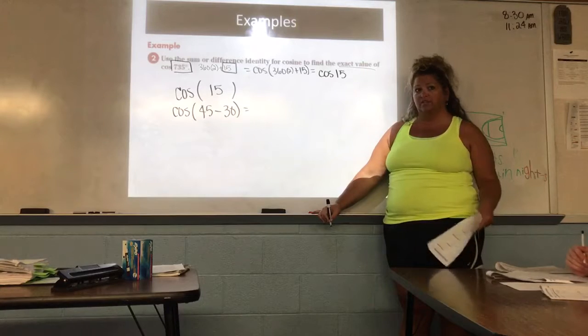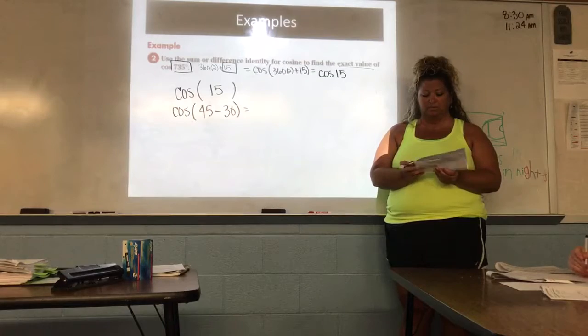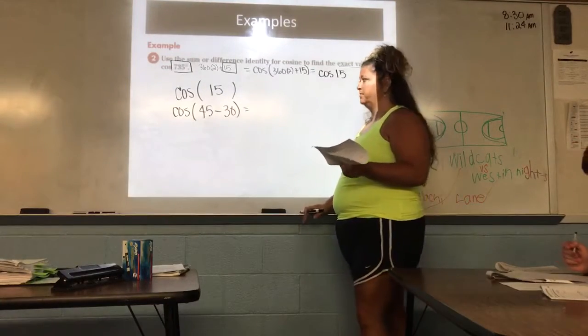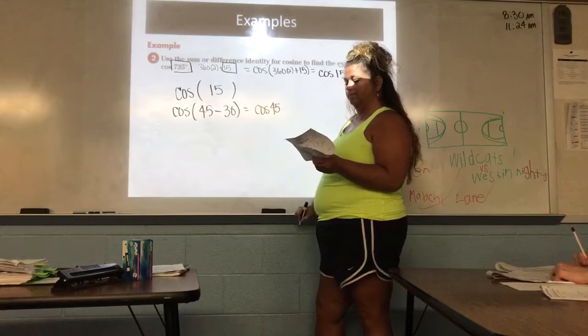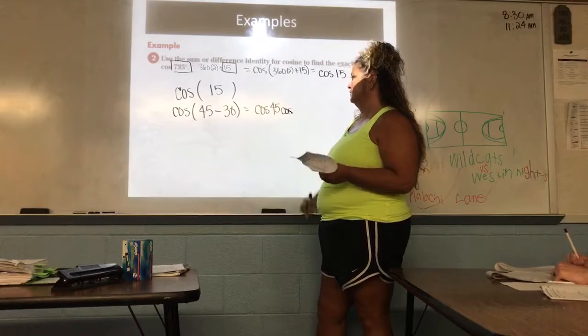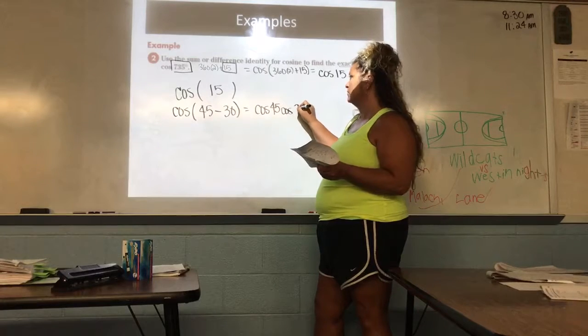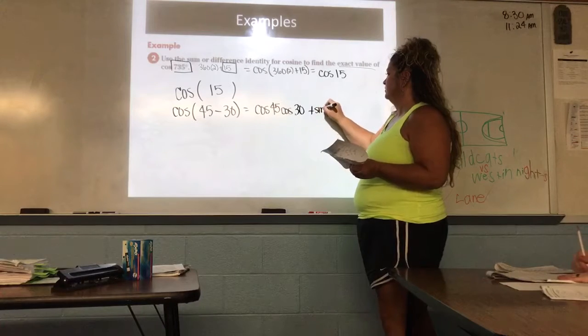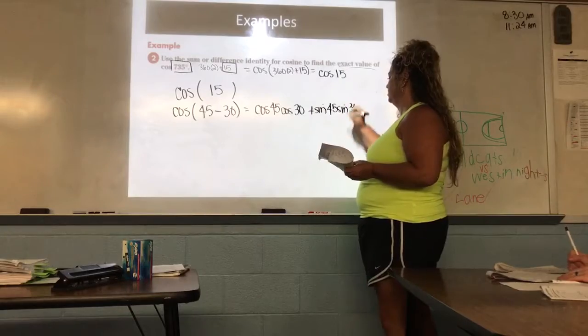Good. I can say that cosine of 45 and 30. Am I going to add or subtract those? 45 minus 30 gets me to 15. Does everybody agree? So did I use the sum or the difference here? Difference. And I'm using cosine. So I'm going to go to my sum and my difference. I'm going to go to my cosine. And somebody tell me what to write.